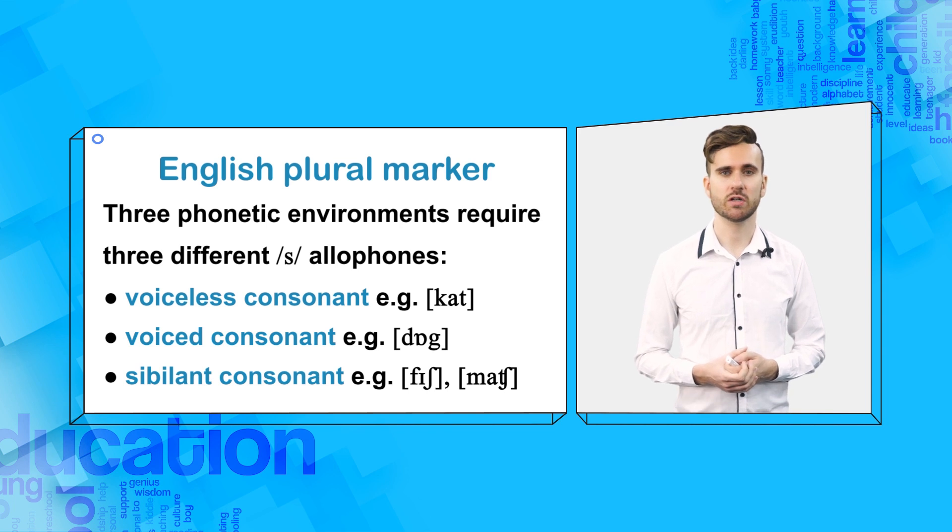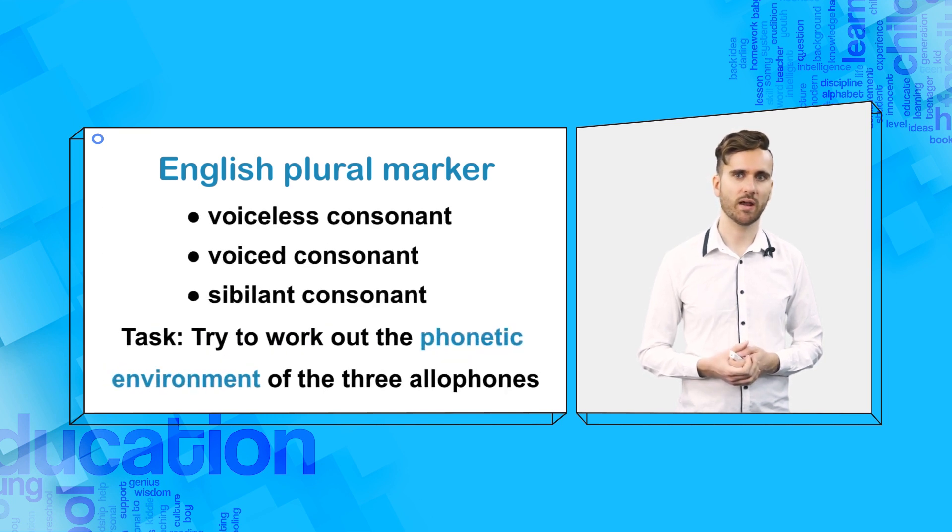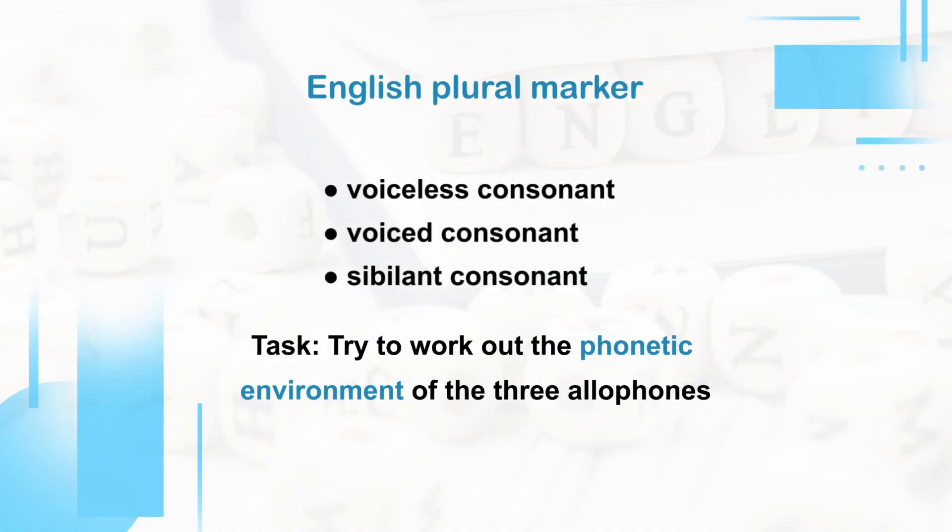The English sibilant consonants are [s], [z], [ʃ], [ʒ], [tʃ], [dʒ]. Now, can you work out which allophones should be used in these three phonetic environments? If you are not sure, then make the above example nouns plural and decide which allophone you used.